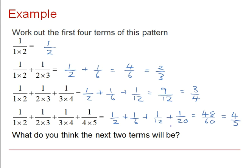If you want to stop and think about the next two terms for yourselves, pause now. My guess would be 5 over 6, and then 6 over 7. If we were to generalise this, then it looks as if, for n terms in this pattern, the answer will always sum to n over n plus 1.